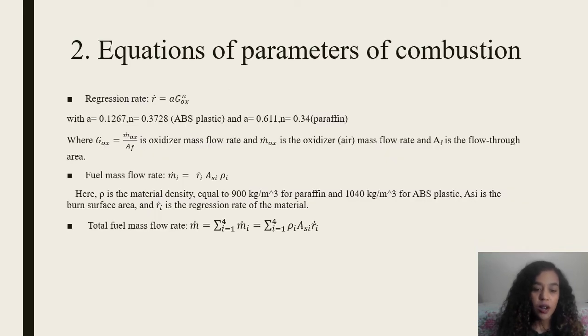Equations of parameters of combustion: Regression rate has several assumptions and allows calculating the fuel melting and combustion in a highly simplified way. G_ox is the relative oxidizer mass flow rate. A and n are the experimental constants.